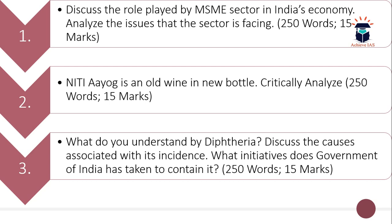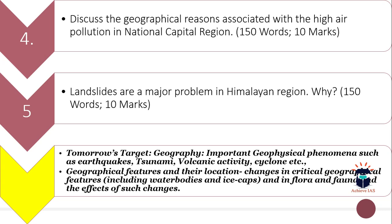These are the three dynamic questions of today. The fourth question is your static question: discuss the geographical reasons associated with high air pollution in the National Capital Region. You have to elaborate upon the geographical reasons responsible for this air pollution. The word limit is 150 and the maximum marks are 10.